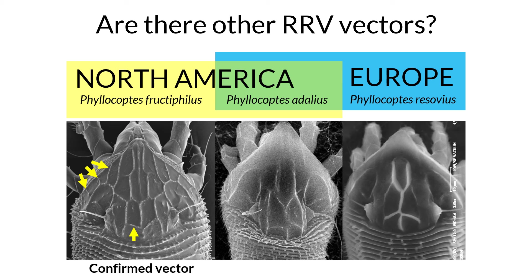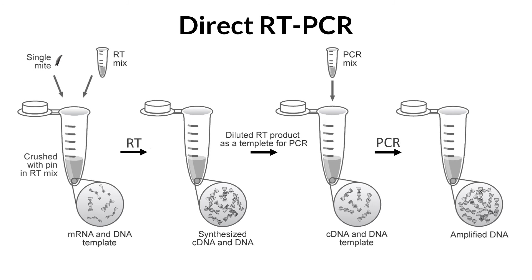The disease is caused by rose rosette emaravirus, a plant virus identified and characterized in our lab in Arkansas in 2011. It is a multi-segmented virus composed of seven negative-sense RNA molecules encapsulated in a double-membrane virus particle. Once in the plant, the disease cannot be cured, so early detection and eradication of infected plants are recommended.